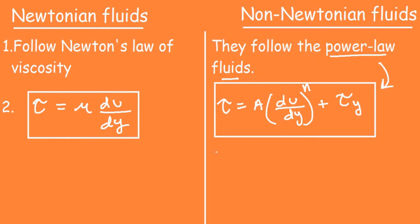In the power law equation, m represents the flow behavior index.